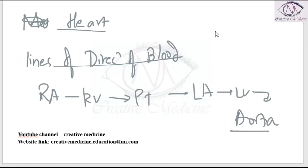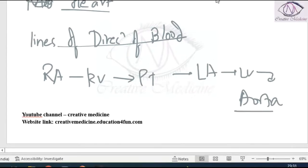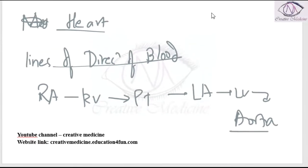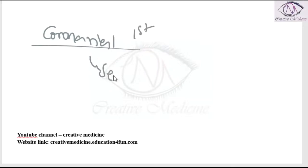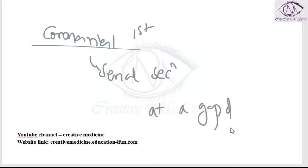An enterotome is used to dissect the heart. The coronaries are dissected before opening the heart. Along the path of the coronaries, make serial sections of the coronary arteries at a gap of 1–3 mm to assess the patency of the coronary arteries.